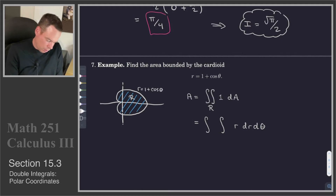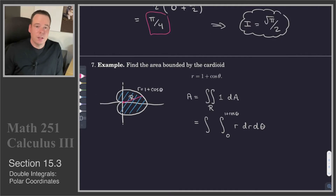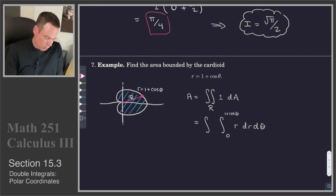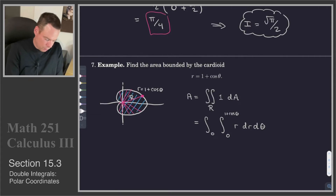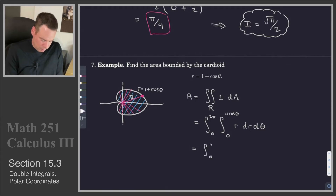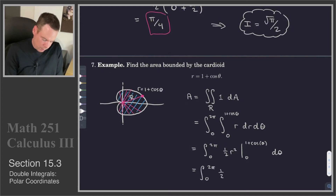r is going to go from 0 to 1 plus cos theta. The way to think about this is to look at a radial line segment that sweeps out over all angles. The radial line segment goes from r equals 0 all the way out to r equals the point on the curve, and then it sweeps out the region. The angles swept over go from 0 to 2 pi. That first integral, the integral of r, becomes one-half r squared, evaluated at the limits of integration, giving one-half times (1 plus cos theta) squared d theta.